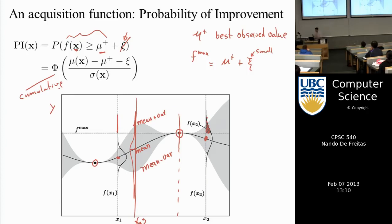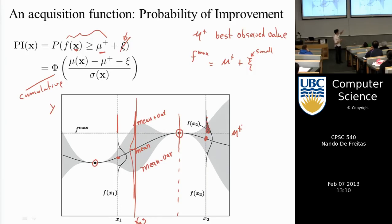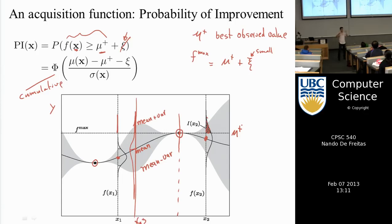Now you're asking: what is the probability that if I drill somewhere else — say Burnaby — I'll get more than 20 gallons? Can I do better than the best I've seen? So mu-plus is the highest return I've had so far. Each next point has to be about both exploration and exploitation.